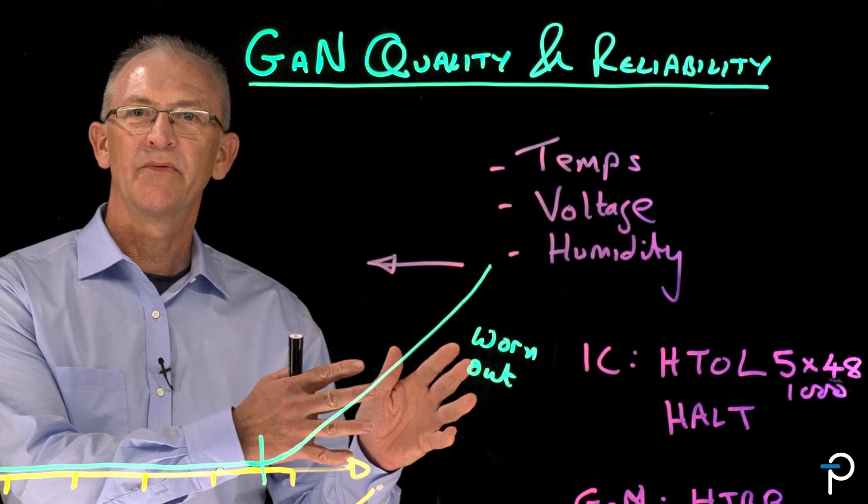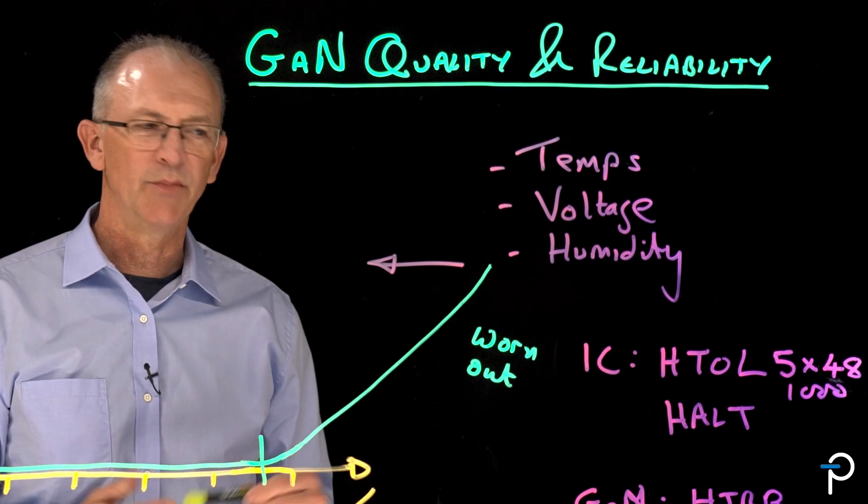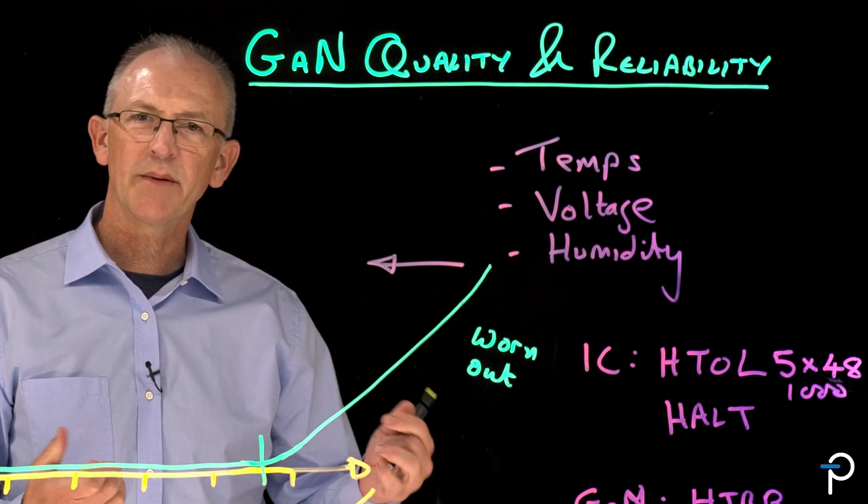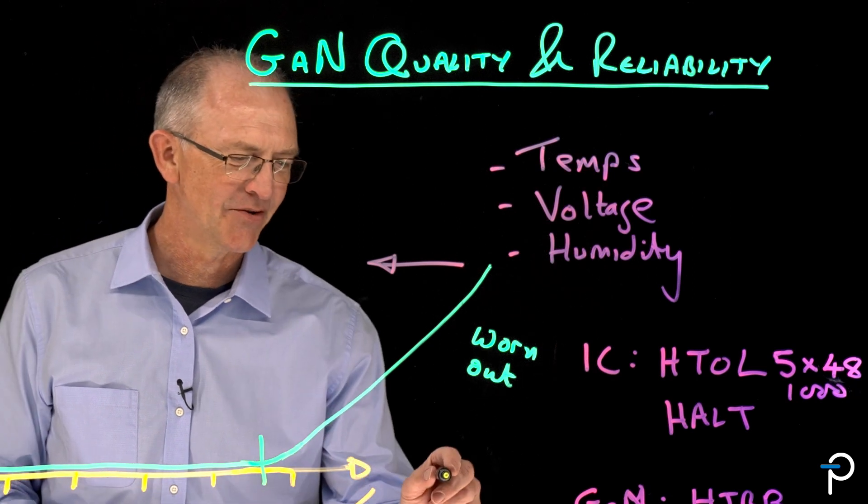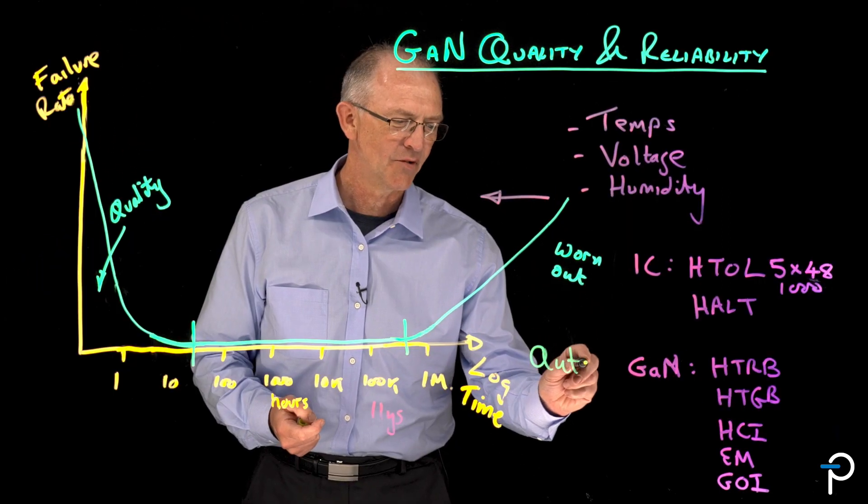So these are the tests we run for industrial and commercial customers. But what about automotive? Automotive folks like GaN too. So we run more tests.